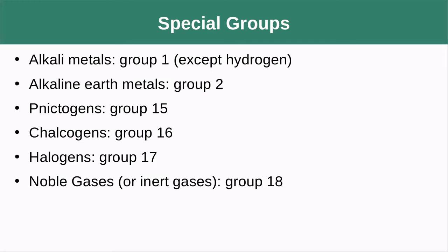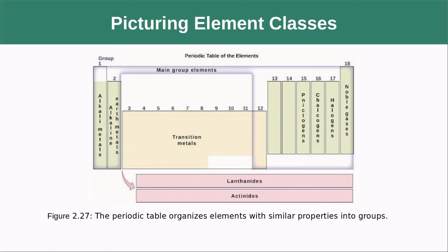Some groups have additional names. Group 1 (excluding hydrogen) is called the alkali metals. Group 2 are the alkaline earth metals. Group 15 are the pnictogens. Group 16 are the chalcogens. Group 17 are the halogens. Group 18 are the noble or inert gases. Down at the bottom we have the lanthanide and actinide series.